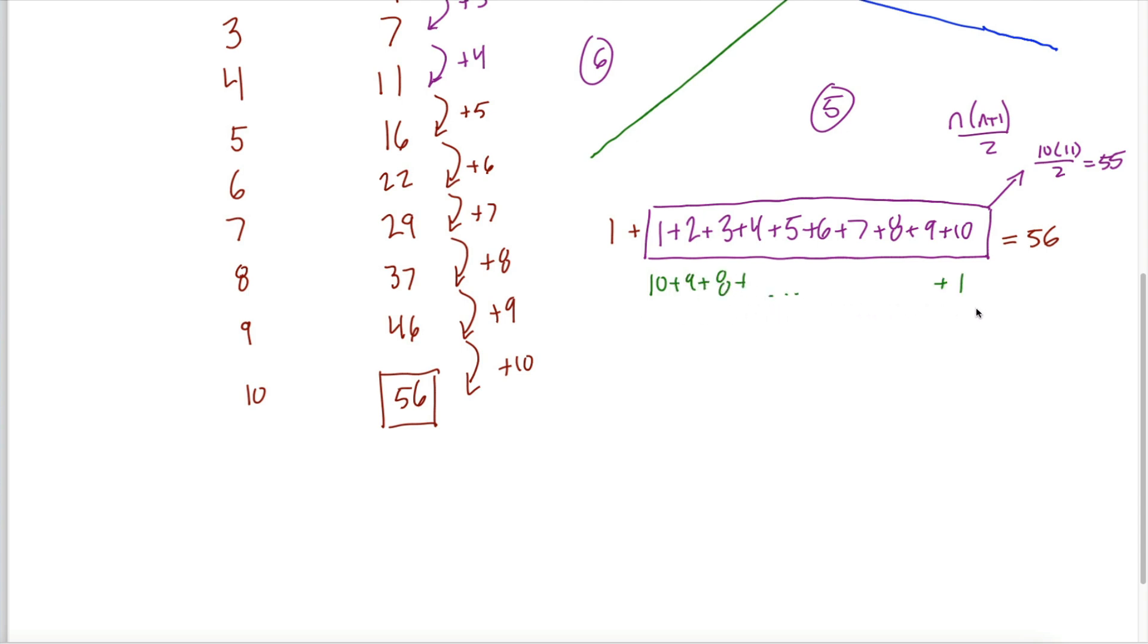And the idea there is you copy this sum and write it directly beneath the original sum, but write it in descending order. So 10 plus 9 plus 8 all the way down to 1. The advantage of doing that is then we can sum the columns. 1 plus 10 gives me 11, 2 plus 9 gives me 11, 3 plus 8 gives me 11, and so on. Adding up a bunch of 11s is a lot easier than adding up the integers from 1 to 10. I just need to know how many 11s I have.